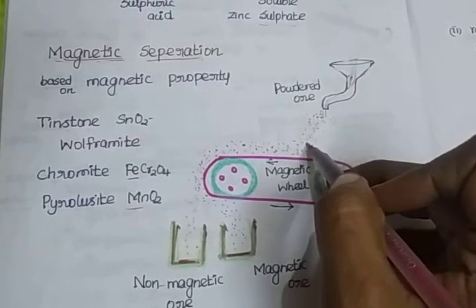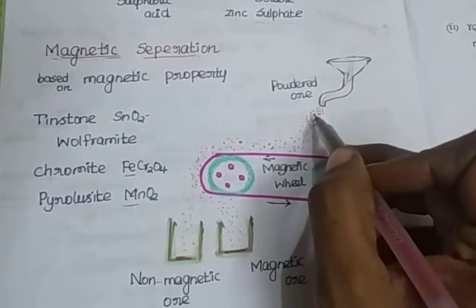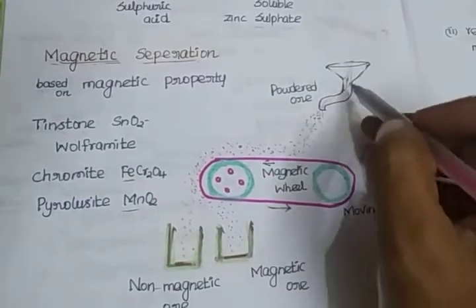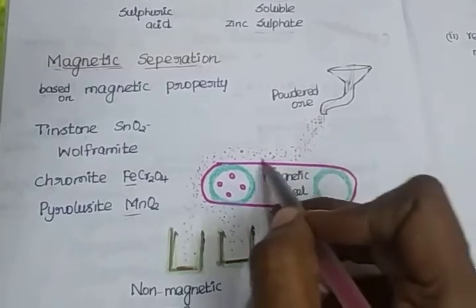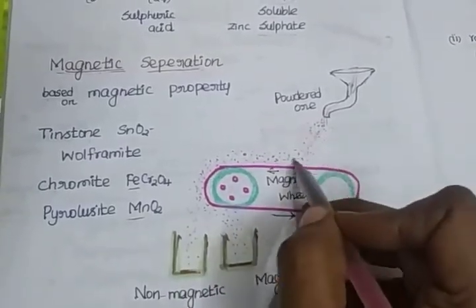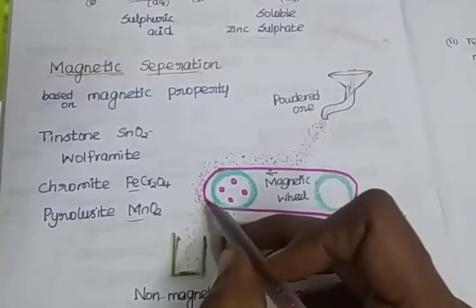Metals with magnetic properties are separated from impurities. The crushed ore is placed on the belt. The ore with magnetic properties is attracted to the magnetic wheel.